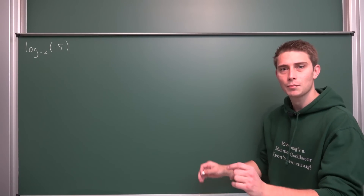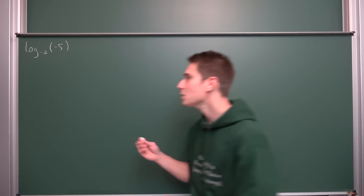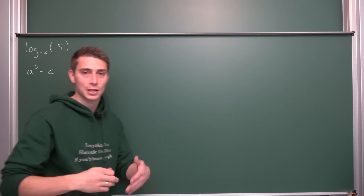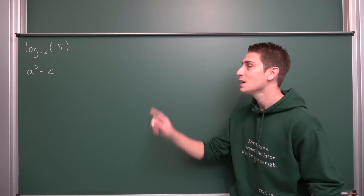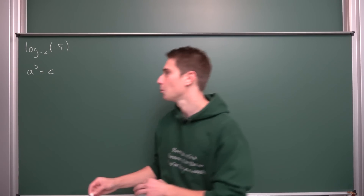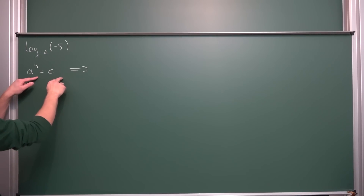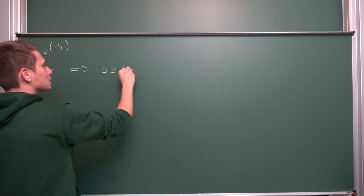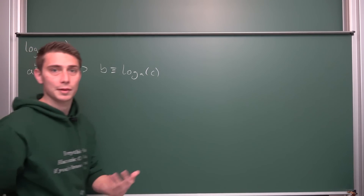First, I want you to remember a little property of logarithms — basically the way it has been first motivated. If we have a to the b-th power being equal to some value c — just simple exponentiation — then the logarithm has the property that we can apply log base a on both sides, getting our exponent out on the other side. So b is hence nothing but the log of base a of c. This is how the logarithm has been defined.